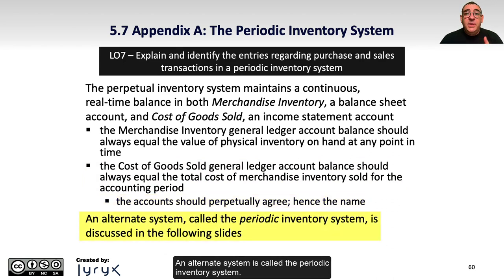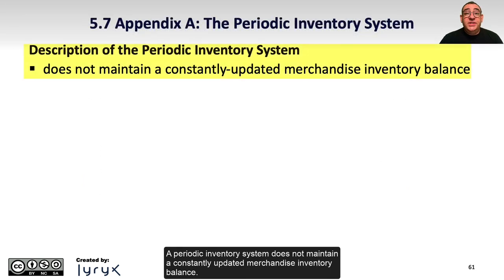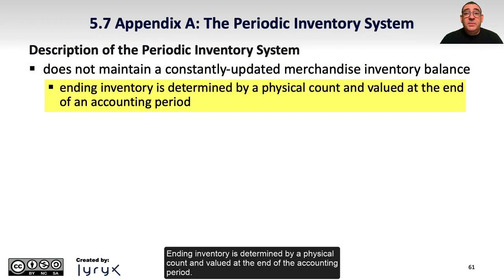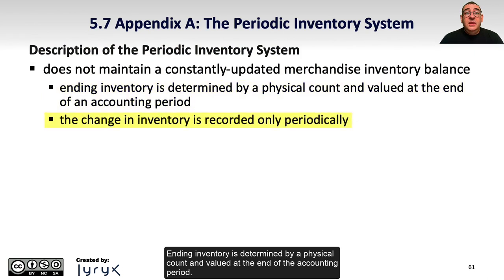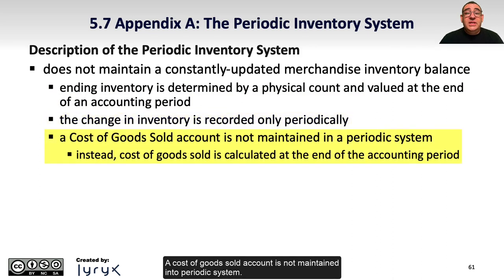An alternate system is called the periodic inventory system. A periodic inventory system does not maintain a constantly updated merchandise inventory balance. Ending inventory is determined by a physical count and valued at the end of the accounting period. The change in inventory is recorded only periodically. A cost of goods sold account is not maintained in the periodic system; instead, cost of goods sold is calculated at the end of the accounting period.